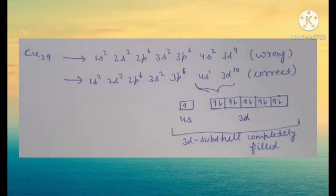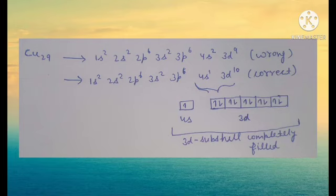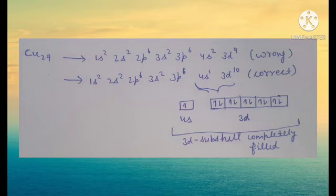Copper has atomic number 29. Its initial configuration would be 1s2, 2s2, 2p6, 3s2, 3p6, 4s2, 3d9. Since 3d has 9 electrons and needs only 1 more to be fully filled, one electron from the 4s subshell jumps into 3d to make it completely filled. So the correct configuration becomes 1s2, 2s2, 2p6, 3s2, 3p6, 4s1, 3d10. The 4s orbital is half-filled and the 3d subshell is completely filled, making Copper's configuration more stable.